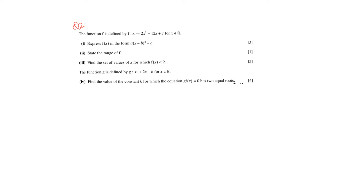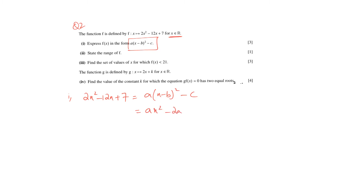Now we have a question in which the function is a quadratic 2x² minus 12x plus 7, defined for all real values. In the first part, express this function in completing-the-square form. You can either use the completing-the-square method or equate it to the given form a(x minus b)² minus c and compare coefficients. When you expand a(x minus b)² minus c you get ax² minus 2abx plus ab² minus c.